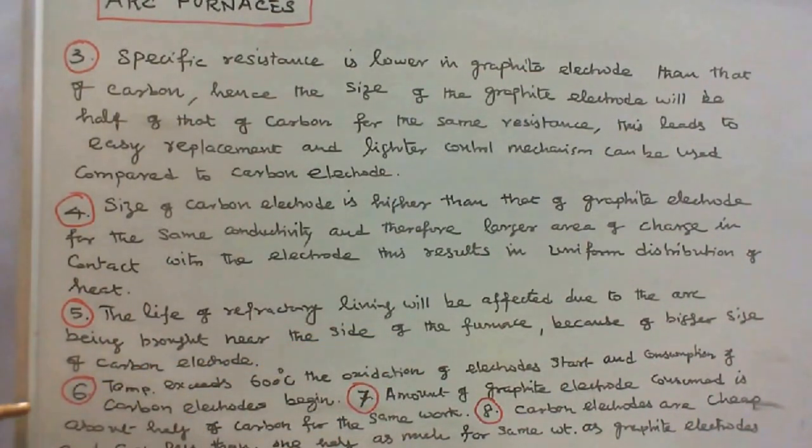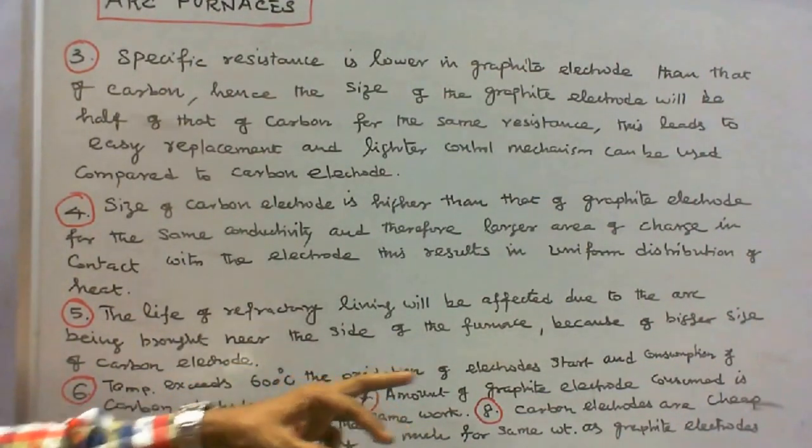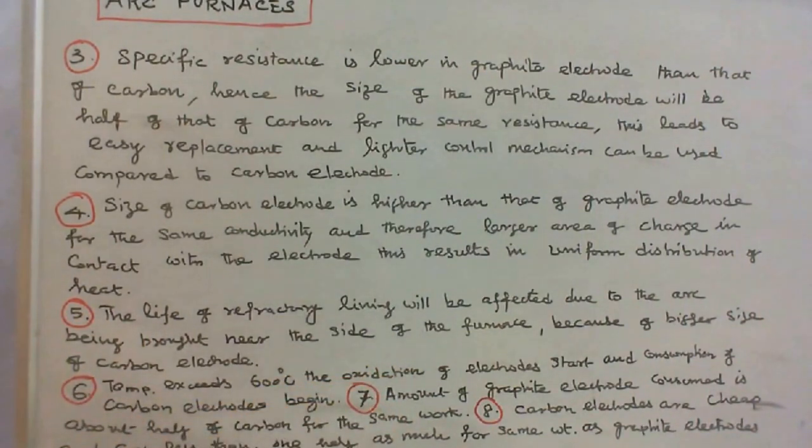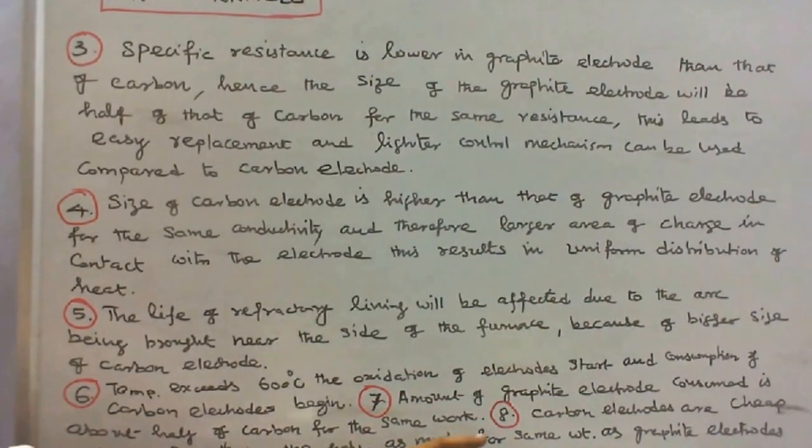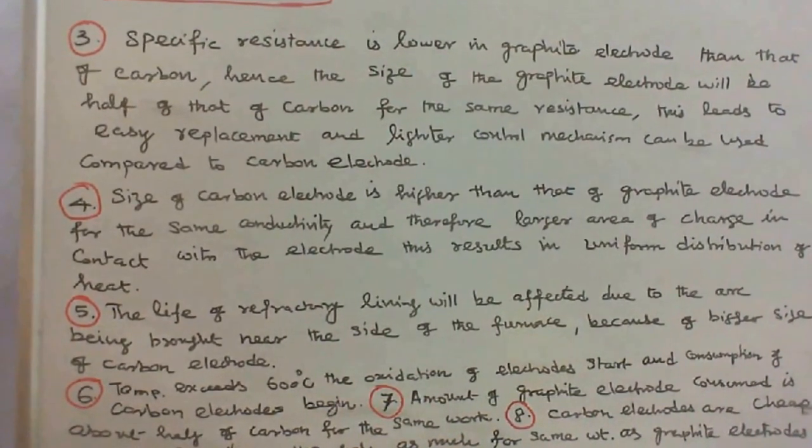Number six: when temperature exceeds 600 degrees centigrade, the oxidation of electrodes start and consumption of carbon electrodes begin. Number seven: the amount of graphite electrode consumed is about half of carbon for the same work. Number eight: carbon electrodes are cheap and cost less than one half as much for same weight as graphite electrodes.